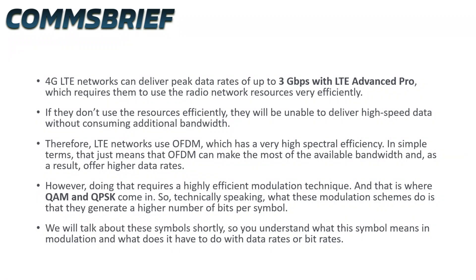4G LTE networks can deliver peak data rates of up to 3 Gbps with LTE Advanced Pro, which requires them to use radio network resources very efficiently. If they don't use the resources efficiently, they will be unable to deliver high-speed data without consuming additional bandwidth. Therefore, LTE networks use OFDM, which has a very high spectral efficiency — in simple terms, OFDM can make the most of the available bandwidth and as a result offer higher data rates. However, doing that requires a highly efficient modulation technique, and that is where QAM and QPSK come in. What these modulation schemes do is generate a higher number of bits per symbol.